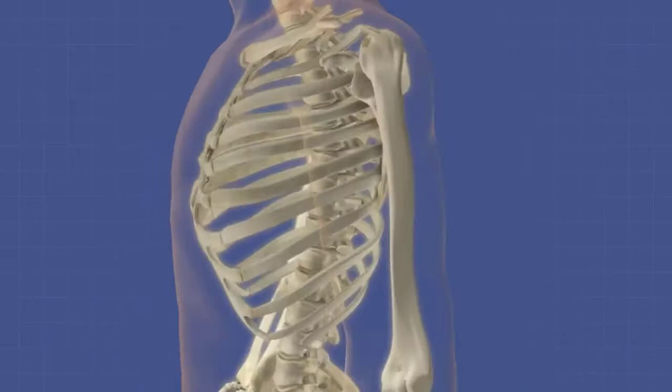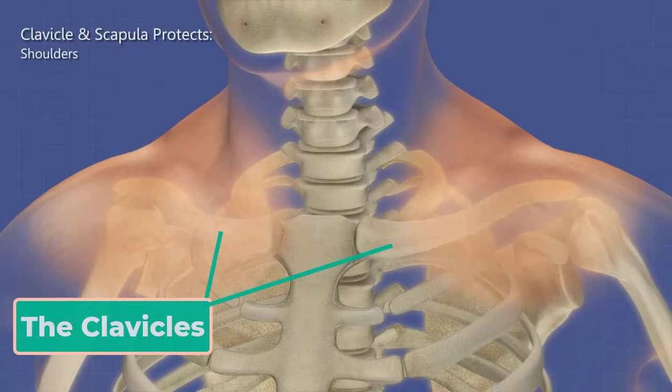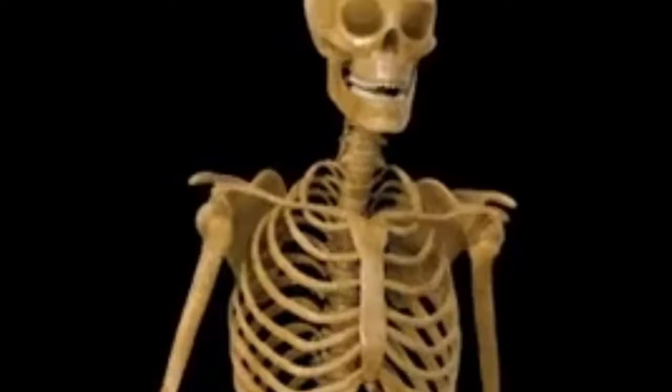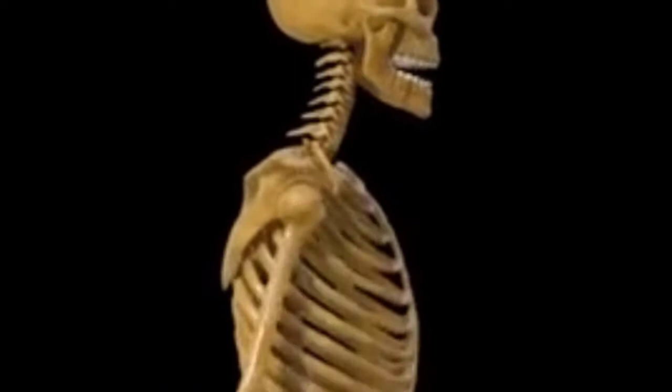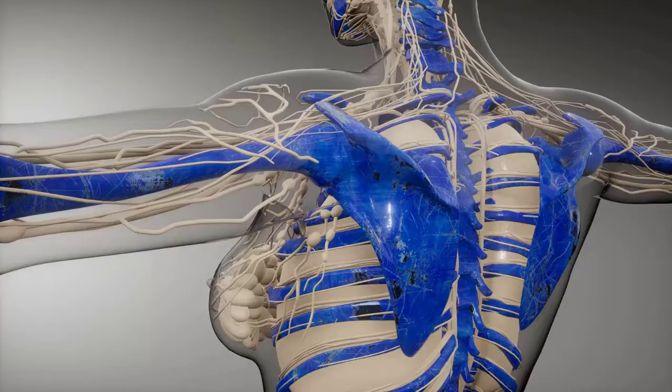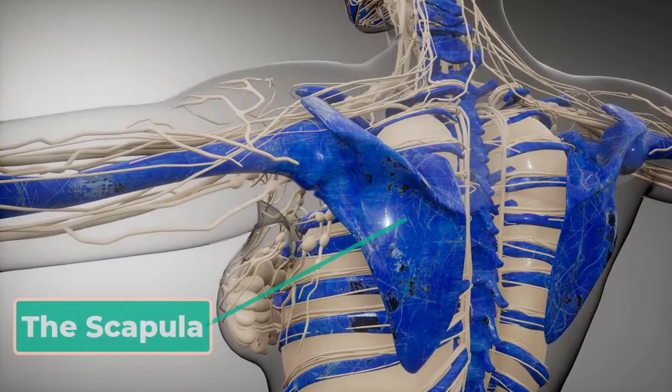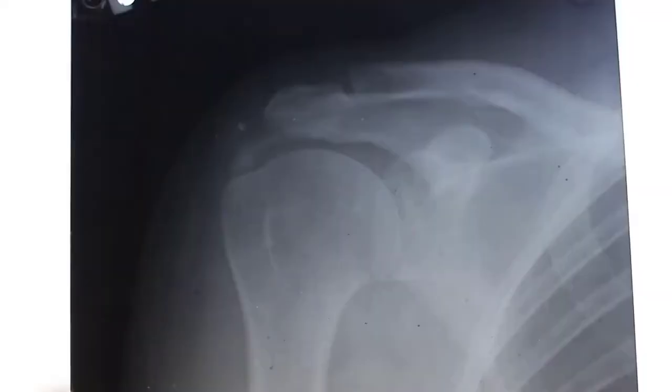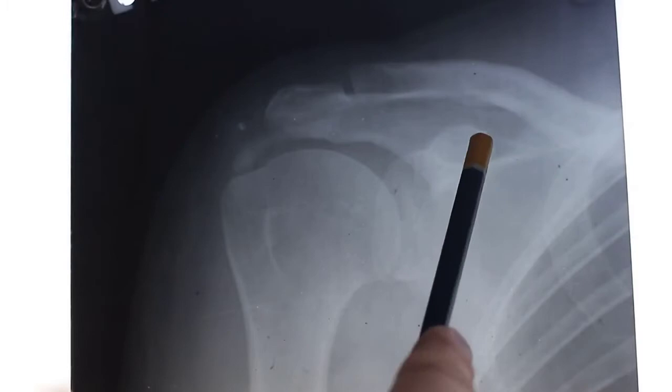The clavicle or collarbone is an S-shaped bone located on the anterior side of the shoulder. It is attached on its medial end to the sternum of the thoracic cage. The lateral end of the clavicle articulates or joins with the scapula just above the shoulder joint. The scapula or shoulder blade lies on the posterior aspect of the shoulder. It is supported by the clavicle and articulates with the humerus to form the shoulder joint.